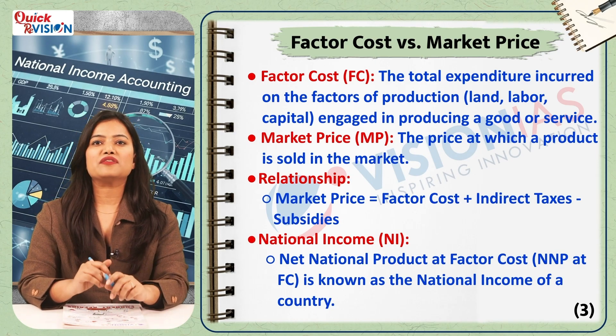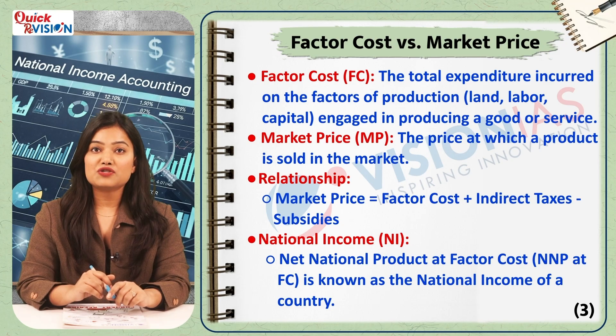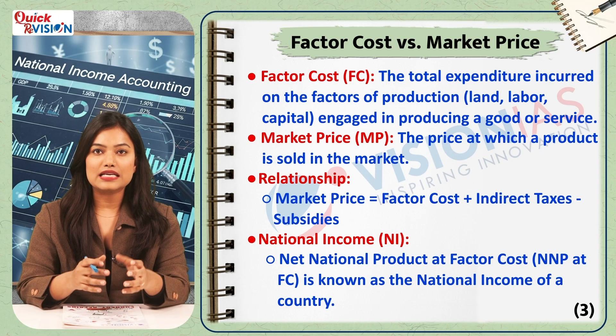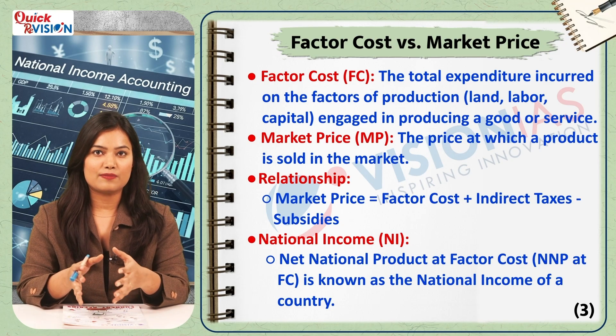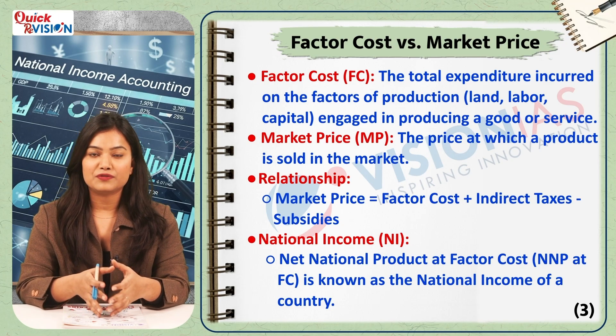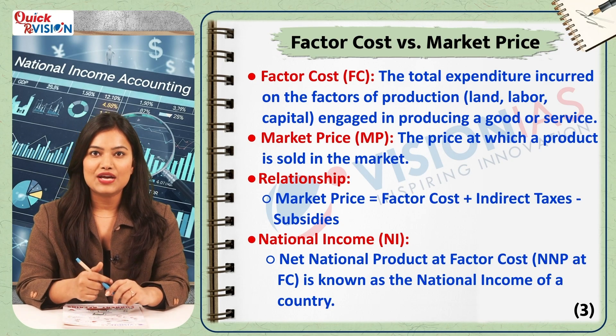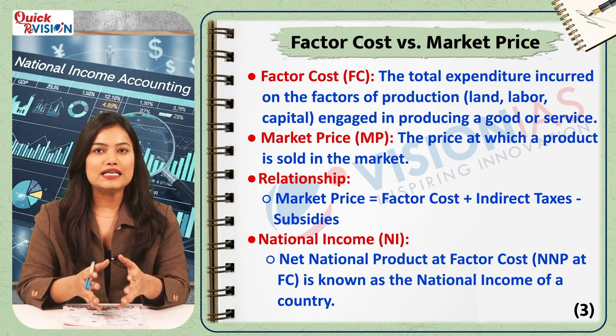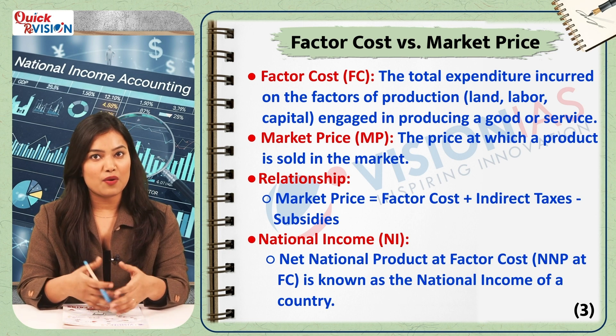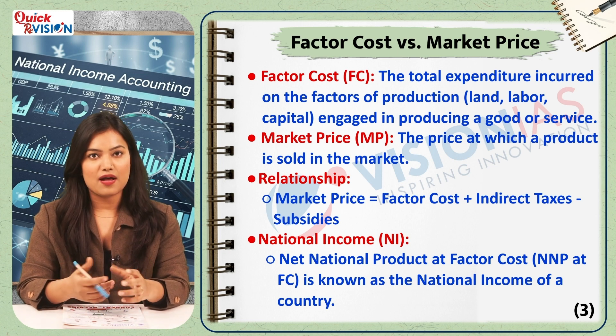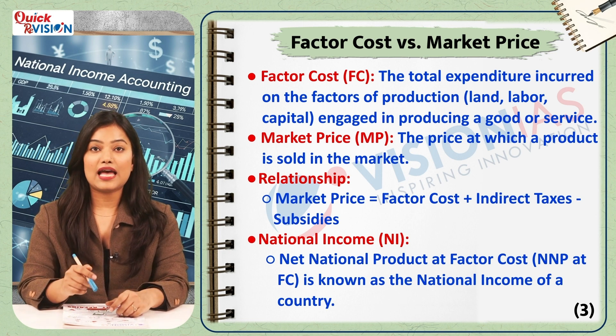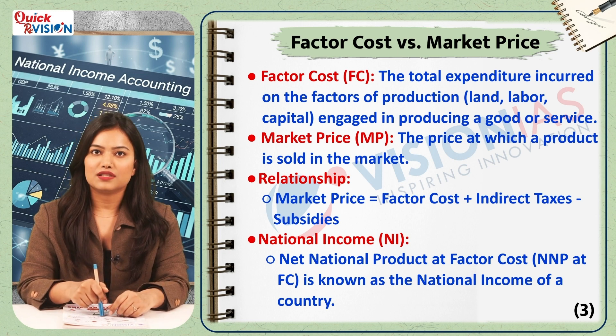The official definition of national income is net national product at factor cost. To calculate it, we subtract indirect taxes from NNP at market price and add subsidies.